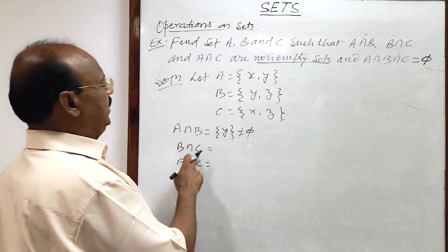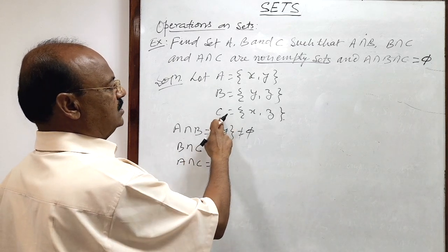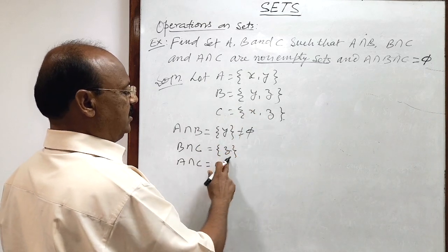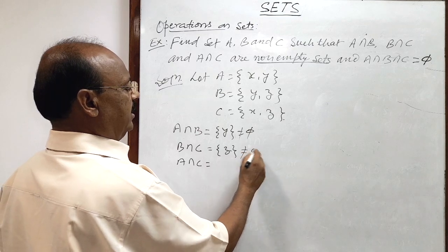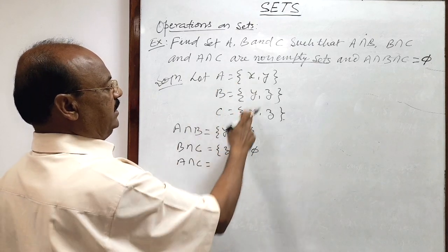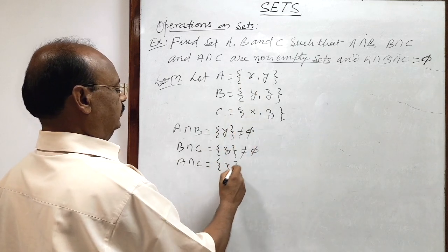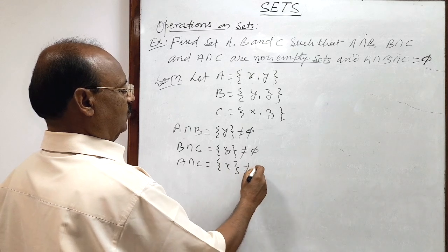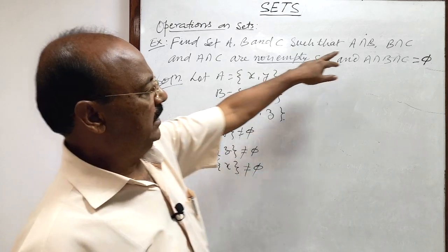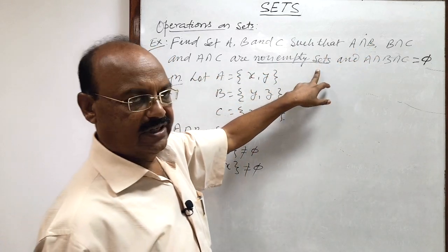Similarly, B∩C — looking at the common elements in sets B and C — z is the common element. So B∩C = {z}, which is also a non-empty set. Similarly, A∩C: from sets A = {x,y} and C = {x,z}, the common element is x. So A∩C = {x}, which is also a non-empty set. We have now proved that A∩B, B∩C, and A∩C are all non-empty sets.